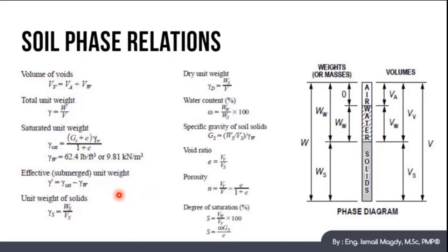Effective or submerged unit weight gamma effective equals gamma saturated minus gamma water. And unit weight of solids gamma S equals Ws over Vs where Ws is the weight of solids and Vs is the volume of solids. Dry unit weight gamma dry equals Ws which is the weight of the solid over V which is the volume.